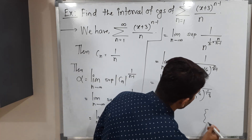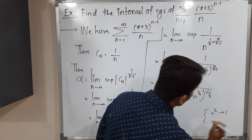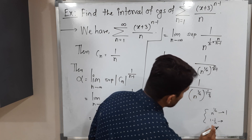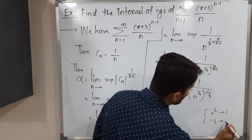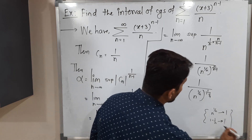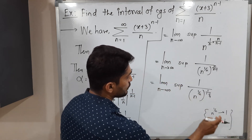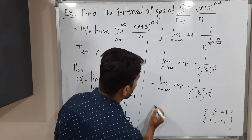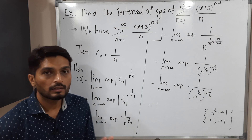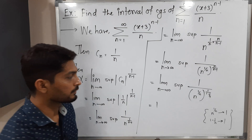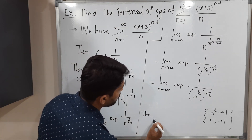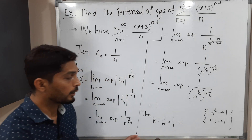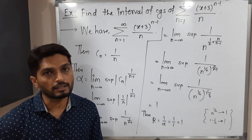We know that n raised to 1/n goes to 1 as n tends to infinity. And 1/n tends to 0, so 1 minus 1/n tends to 1. Therefore the base goes to 1 and the power also goes to 1, so the value is 1. So finally we got alpha equals 1. The radius of convergence is the reciprocal of alpha, which is 1 upon 1, equal to 1.